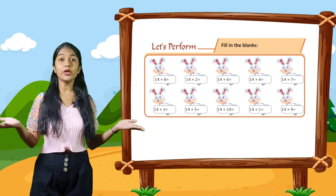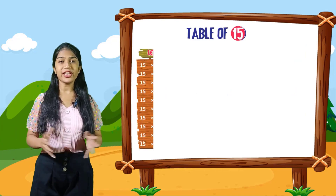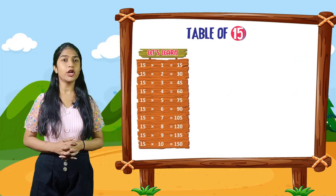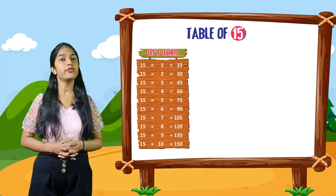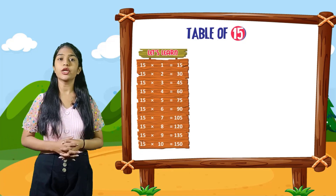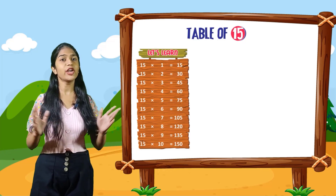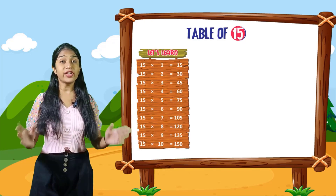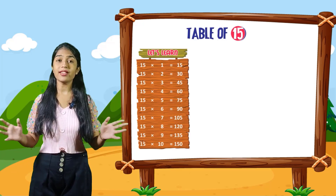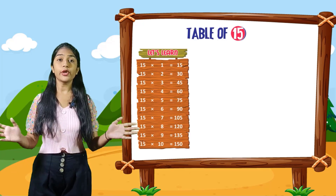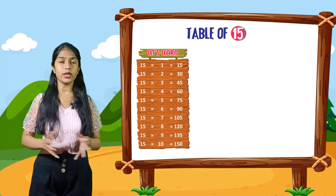So now we will do the table of 15. Let's learn. 15 into 1 is equal to 15. 15 into 2 is equal to 30. 15 into 3 is equal to 45. 15 into 4 is equal to 60. 15 into 5 is equal to 75. 15 into 6 is equal to 90. 15 into 7 is equal to 105. 15 into 8 is equal to 120. 15 into 9 is equal to 135. 15 into 10 is equal to 150.